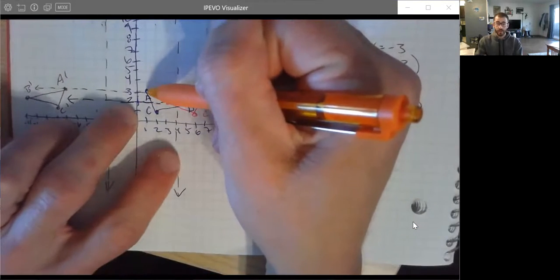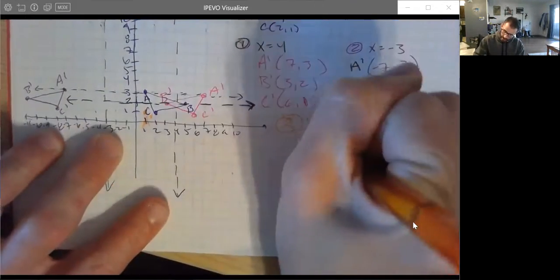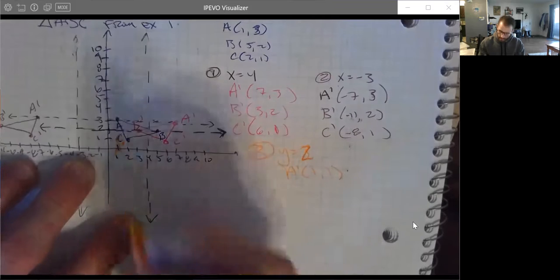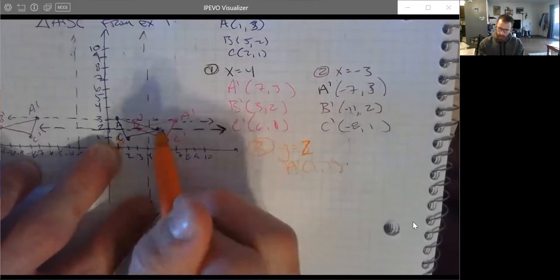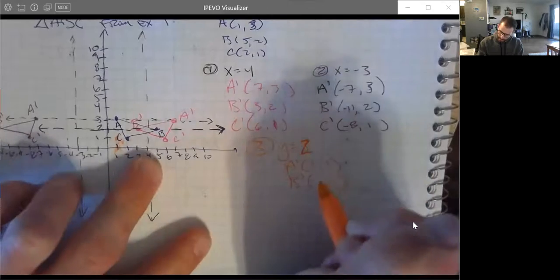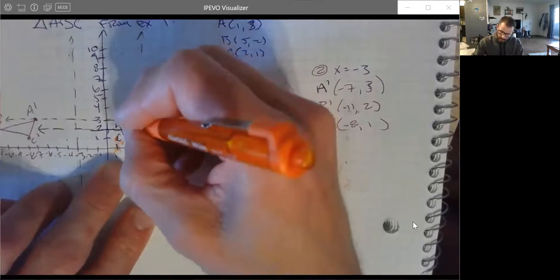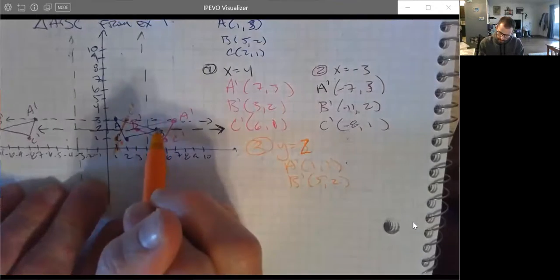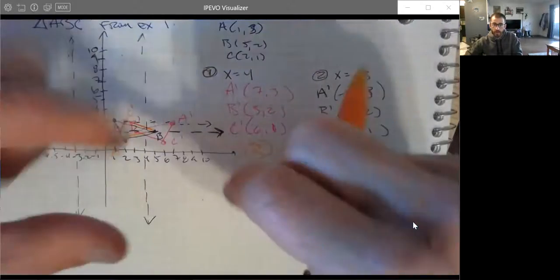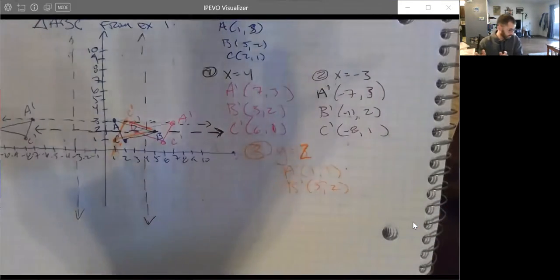So A is on top by one. So A prime needs to be down one. A prime is at 1,1, not 1,3. The Y changed. Let's see. B. B is on it. B is on the line of reflection. So B prime is on the line of reflection. So B prime is the same. Five comma two. Now, finally, C. C is one unit below. So C prime is going to be one unit above. And does it look like we took that blue triangle and rotated it around Y equals two? Yeah, it does. It's messy. Sorry. But it does. It looks like that. C prime is at 2,3, just to be accurate.